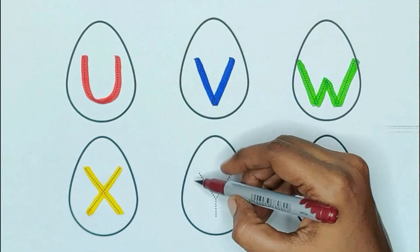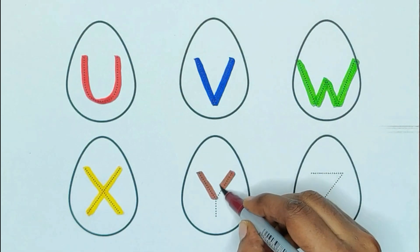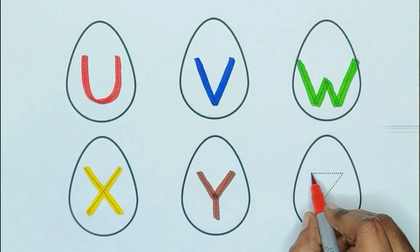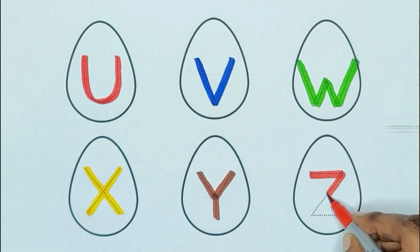Brown color, Y. Y for yak. Red color, Z. Z for zero.